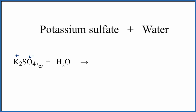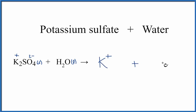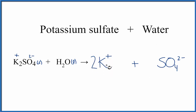We take solid K2SO4 and put it in liquid water. When we do that, it dissolves into its ions. So we'll have K plus and then the sulfate ion. Note we have a two after this K, so we need to take that into account on this side of the equation so it's balanced. We'll put a coefficient of two in front of the K plus, so now the K's are the same on both sides of the equation.